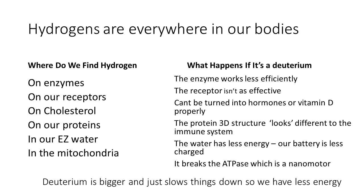Deuterium can get into receptors as well. Take the thyroid as an example: someone may have thyroid symptoms but a blood test shows plenty of T3, the active hormone. The problem isn't the hormone — it's at the level of the receptor. Because deuterium instead of hydrogen alters hydrogen bond angles, it changes the shape of the receptor, making it look different to the thyroid hormone trying to bind. Based on probabilities and resonance, the receptor is the problem even though there's plenty of hormone around. This is also a case where deuterium depletion could help.